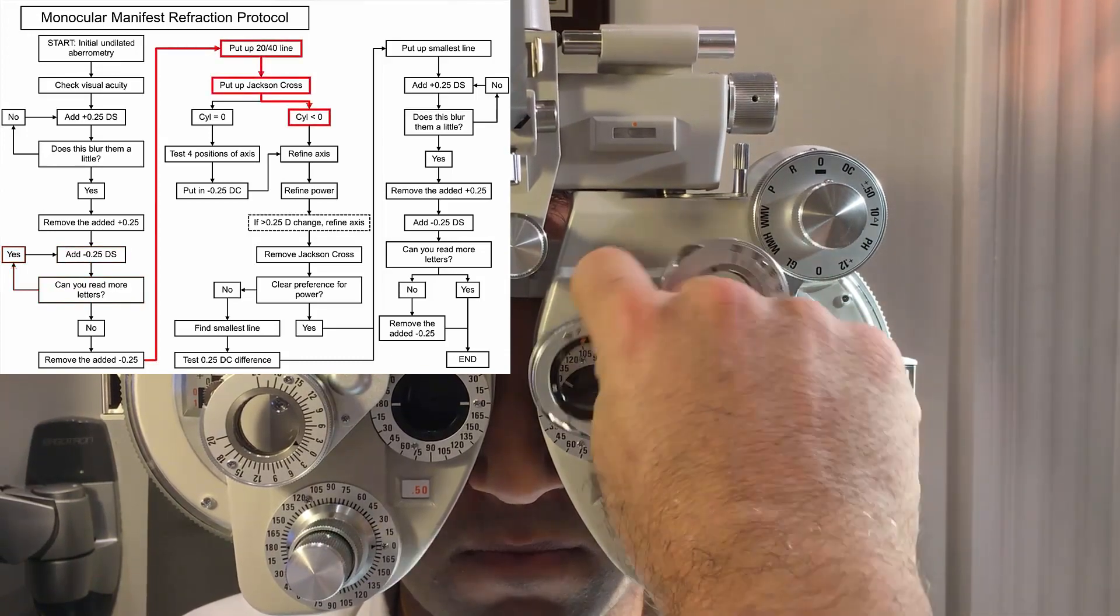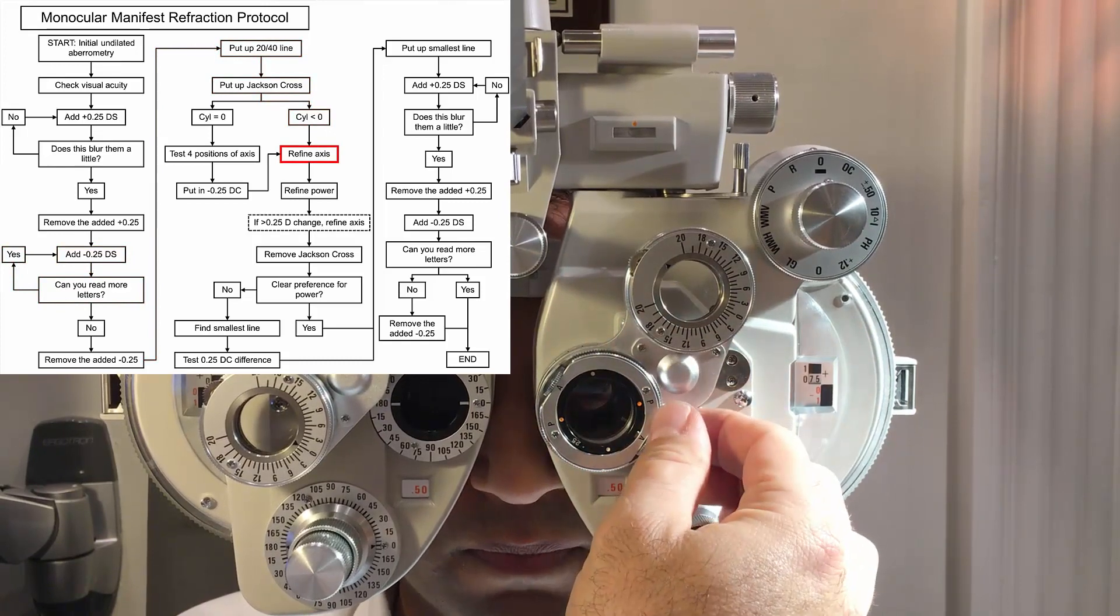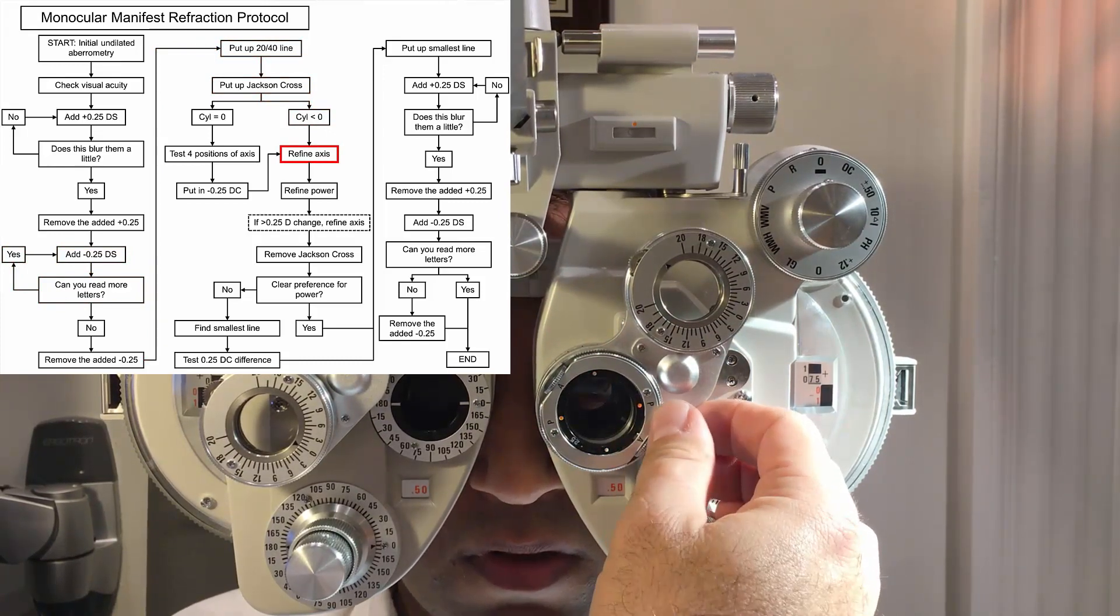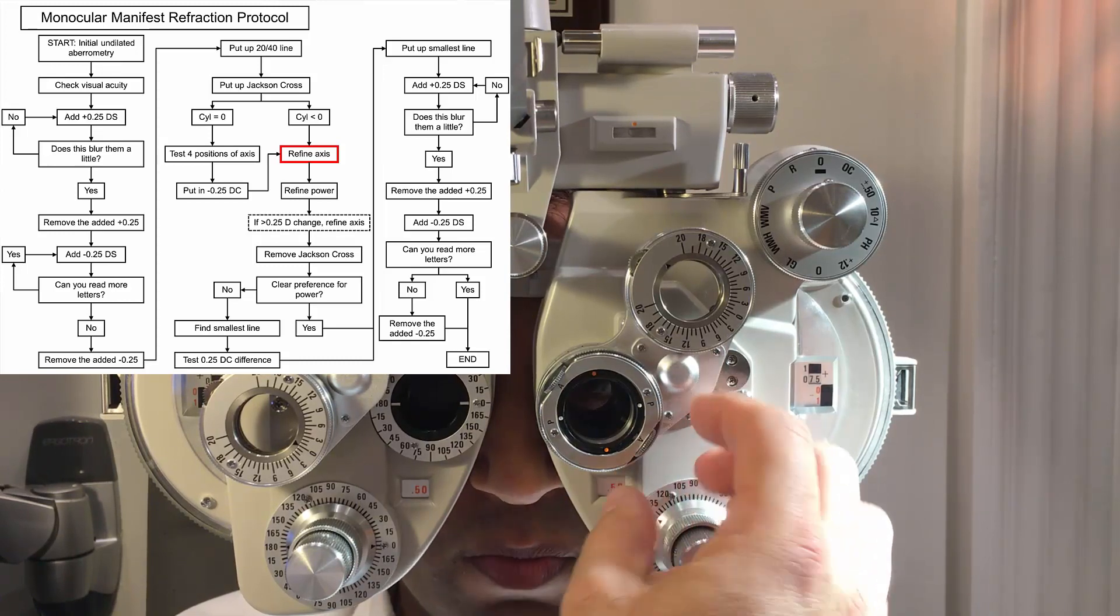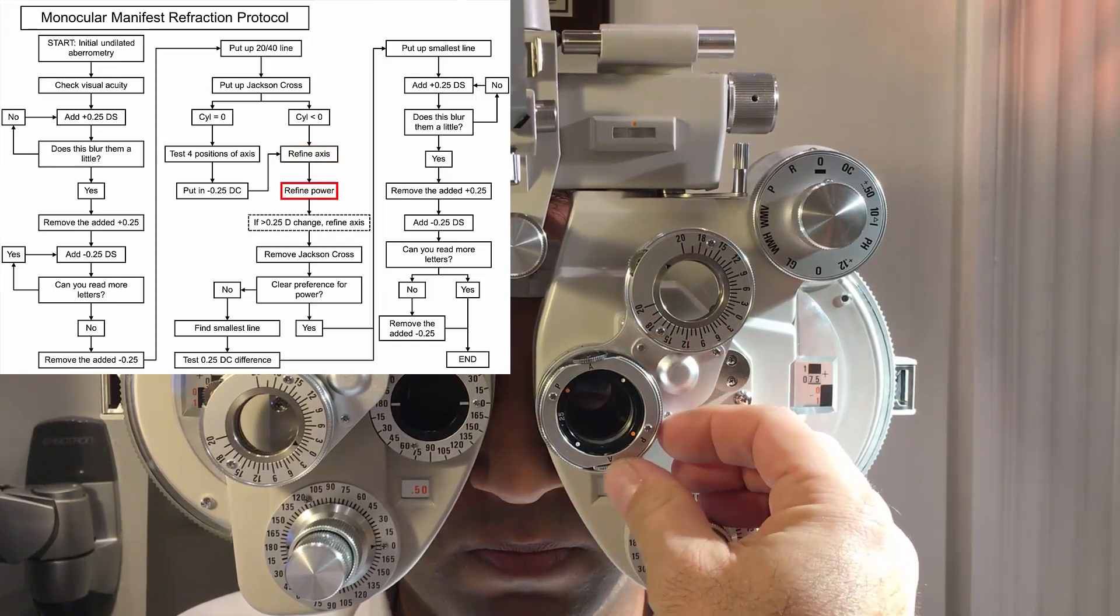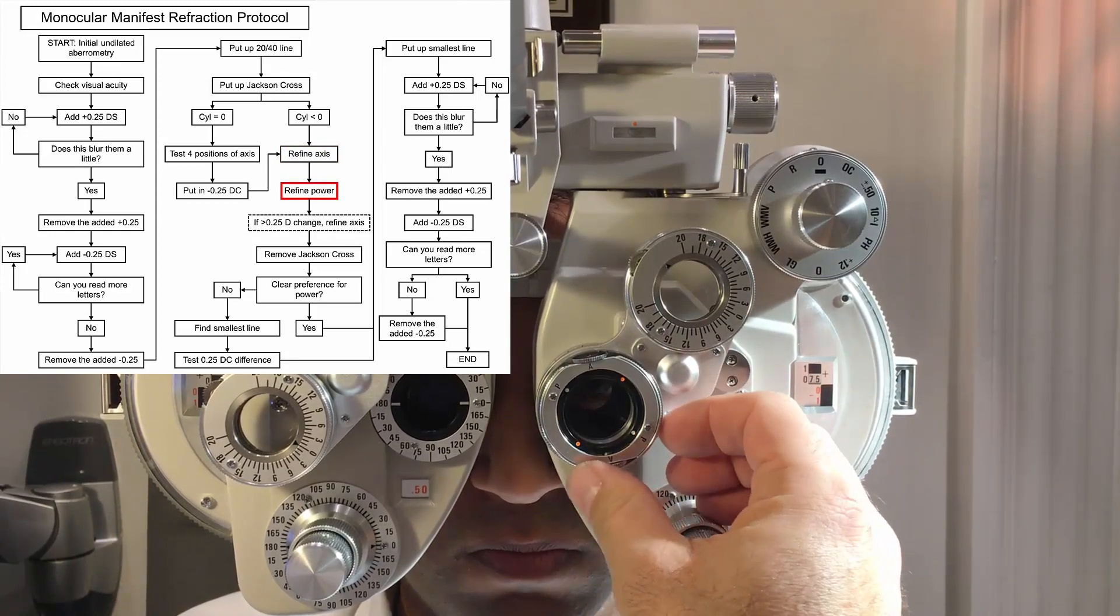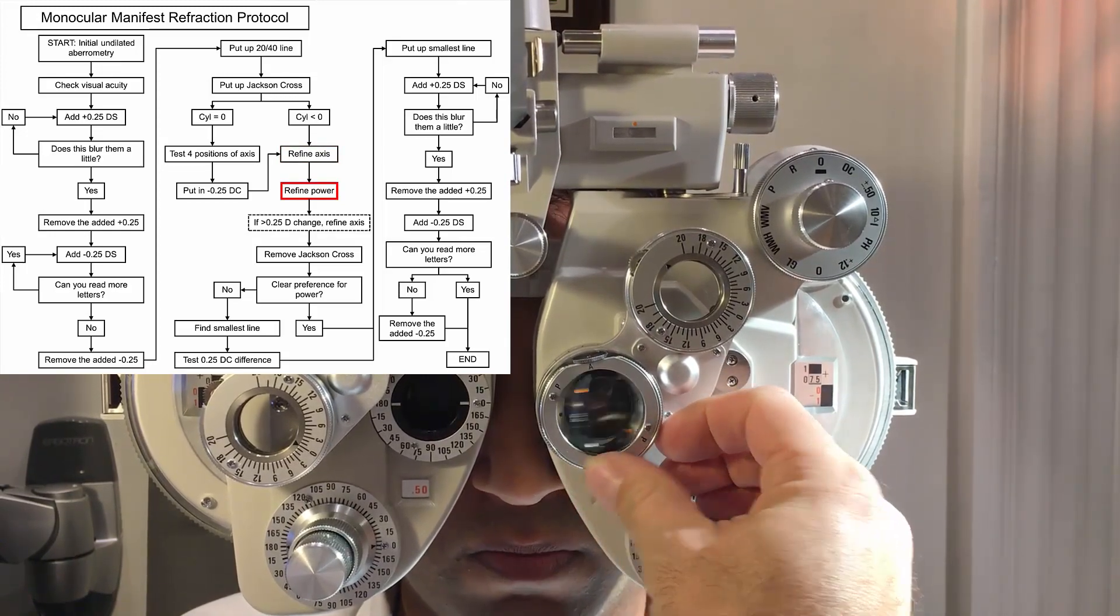Looking at the O where the arrow is, the edges are sharper with one or two. One, two, the same. Similar. What about three or four? Four. Five, six. Five, six, a little bit better.